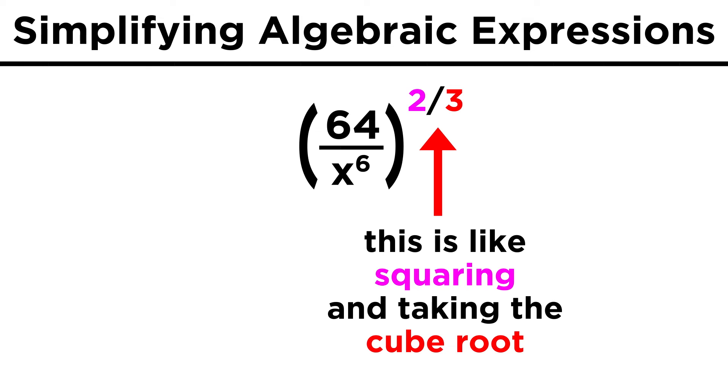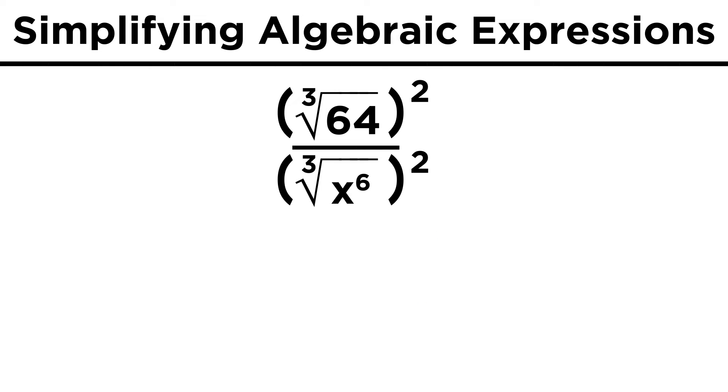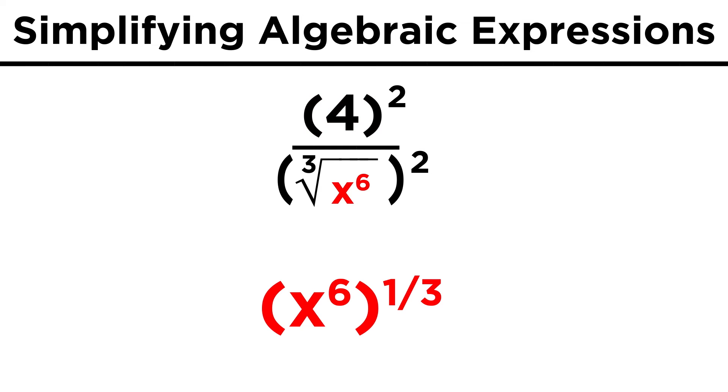Now as we recall, raising something to the two-thirds power is the same as squaring it and taking the cube root in some order. Since it's easier to work with small numbers, let's take the cube root first, making sure to do it for both top and bottom. The cube root of sixty-four is four. The cube root of x to the sixth, which is like x to the sixth to the one-third, is equal to x to the sixth times one-third, which is two. So we get x squared.